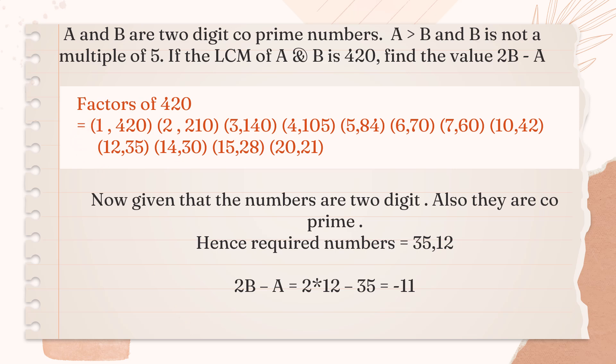The condition in the question states that A and B are two-digit numbers. So, I cancel out single-digit factors. They are out of context. Here we cancel them all.